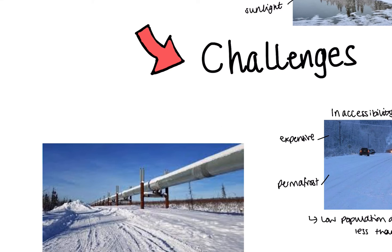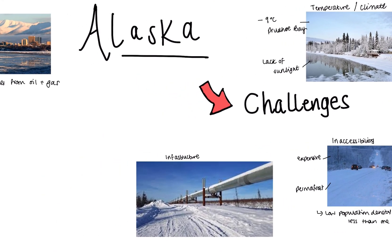Infrastructure is another huge challenge. The Trans-Alaskan Pipeline — as you can see in the picture — has to be built on stilts. If it's not built on stilts, there's a risk it could melt the permafrost, that permanently frozen ground. Similar to how cars could become stuck if they drove on the permafrost, the pipeline faces the same risk. However, building it above ground also runs the risk of an oil spill. So the Trans-Alaskan Pipeline needs to be built on stilts to avoid melting the permafrost.